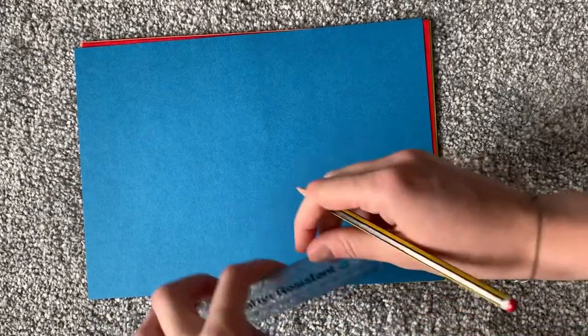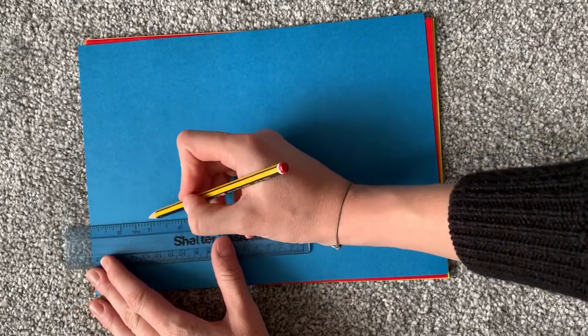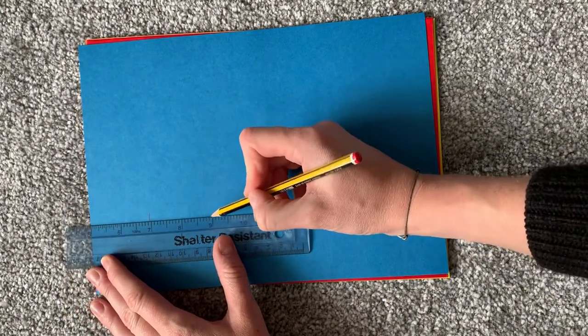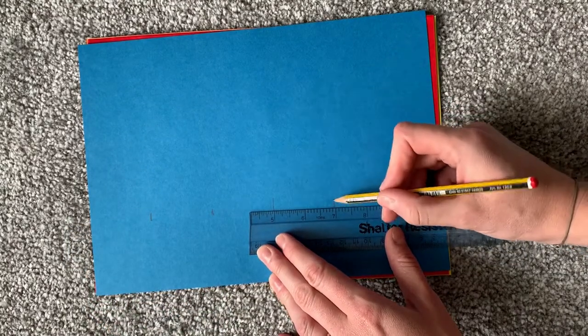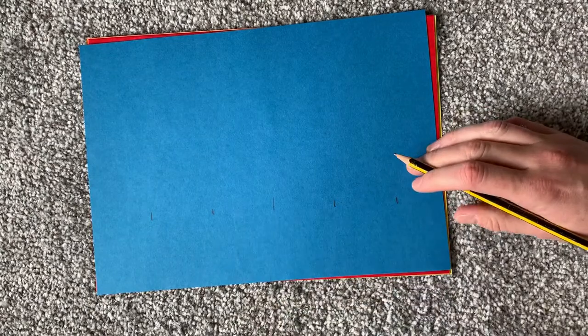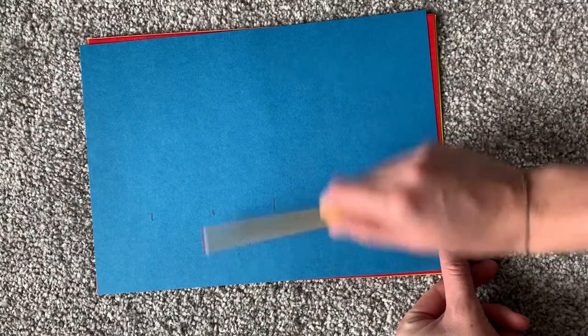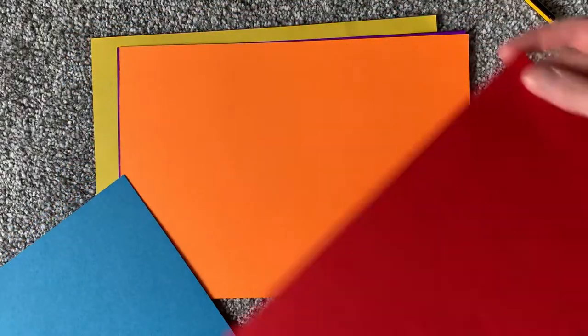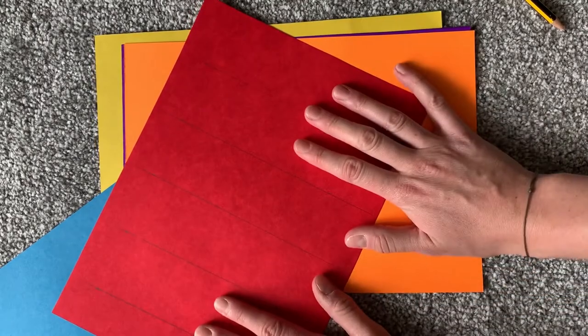So to get started you need your pencil and a ruler and you need to measure two-inch strips. So every two inches just make a mark along, widthways along the paper like that. And then you're going to cut those strips all the way and you're going to do that for all your pieces of paper. So you'll notice on the back of these I've already made my lines and now I'm going to cut them all out.